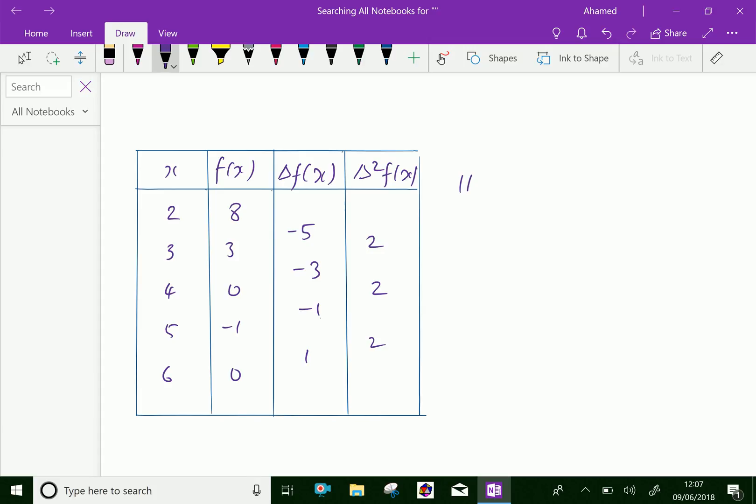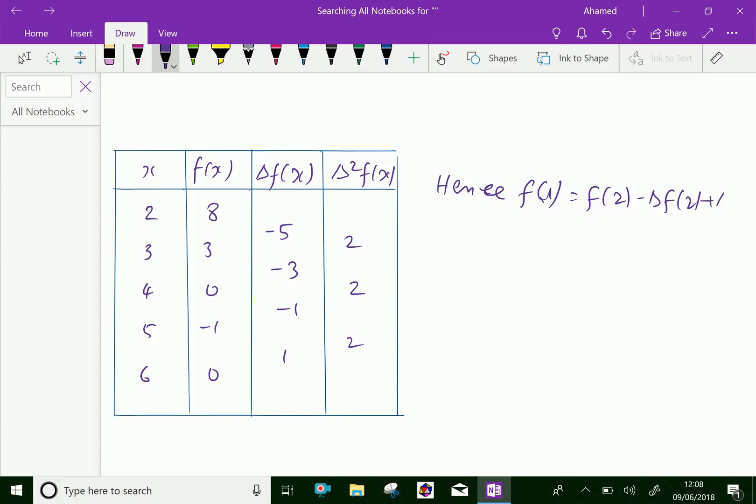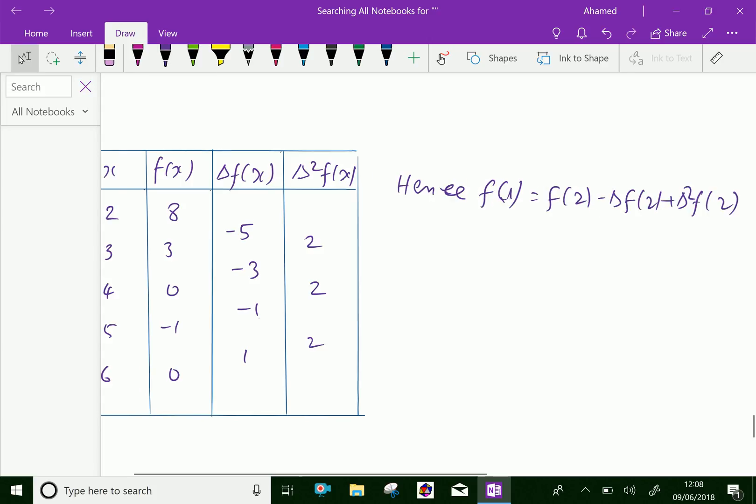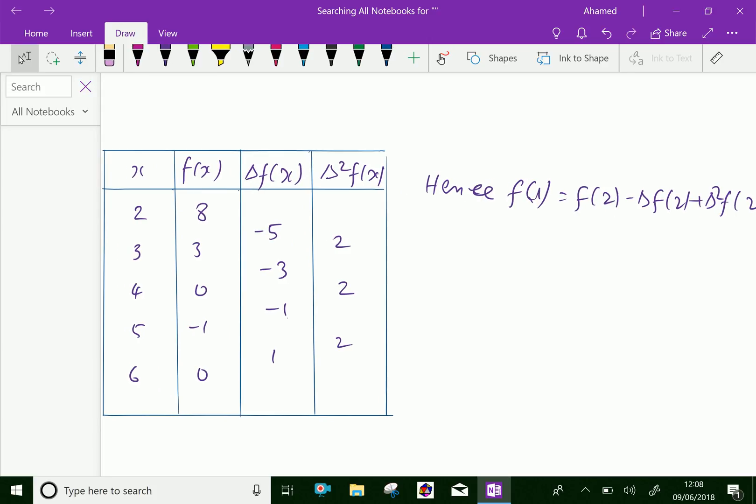Hence, f(1), therefore you can write: f(1) equals f(2) minus delta f(2) plus delta square f(2). The higher order difference being 0, so we avoid that one. Now we will put the values: f(2) equals 8, delta f(2) equals minus 5, plus delta square f(2) is 2.